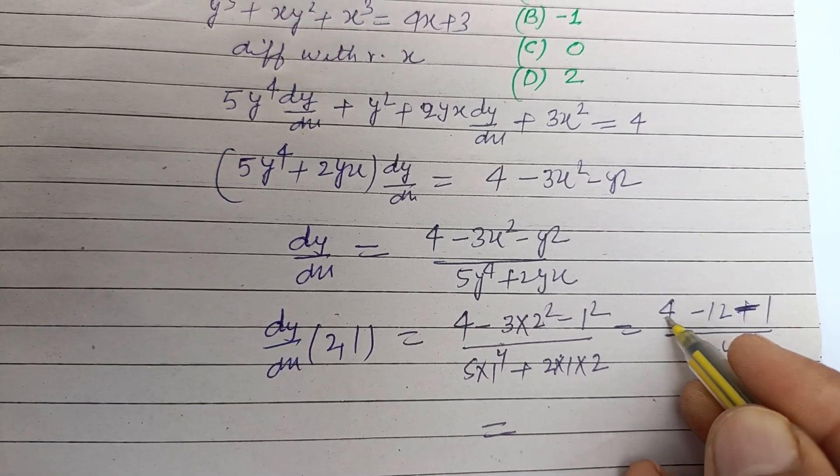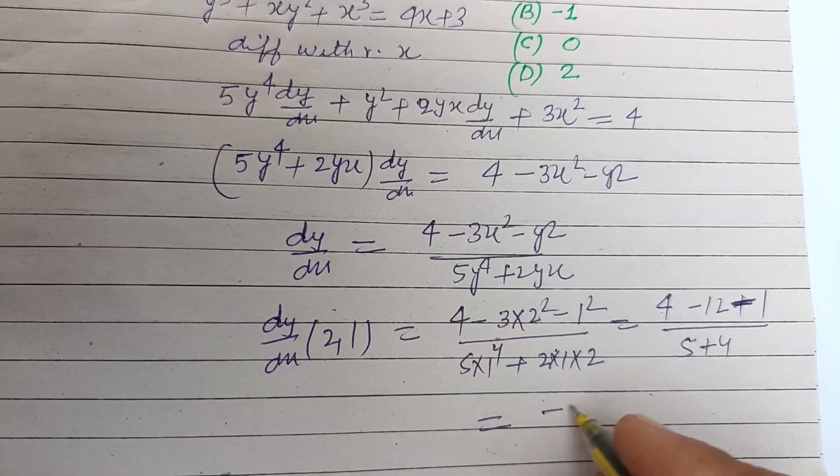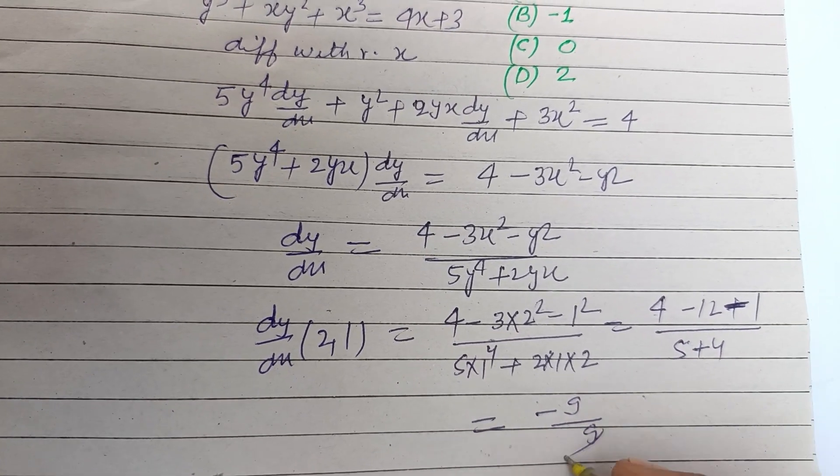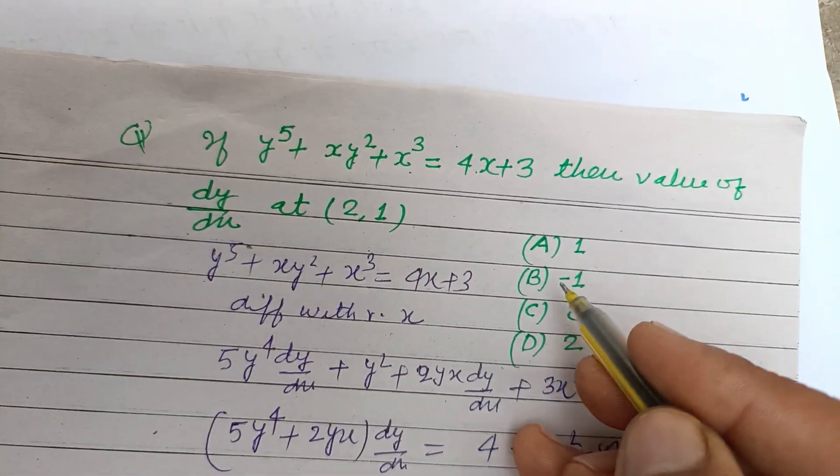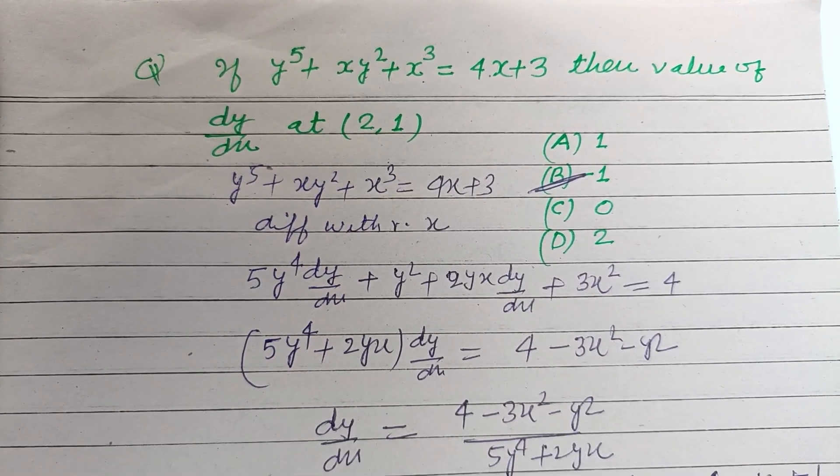Therefore the answer is 4 minus 13, this is minus 9 upon 9. This is minus 1, so minus 1 is the correct answer of this question which is found in option B. I hope you got it.